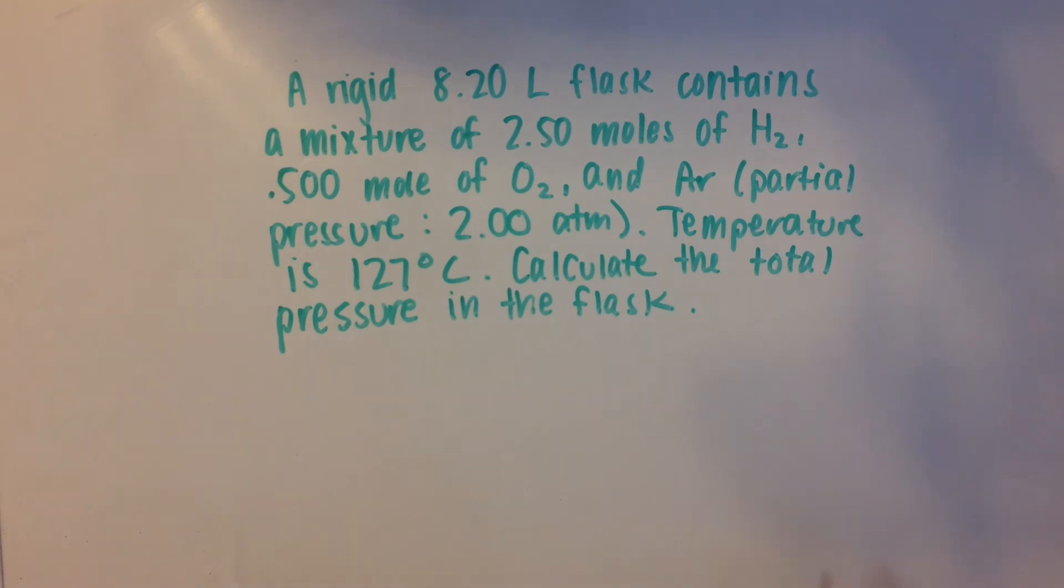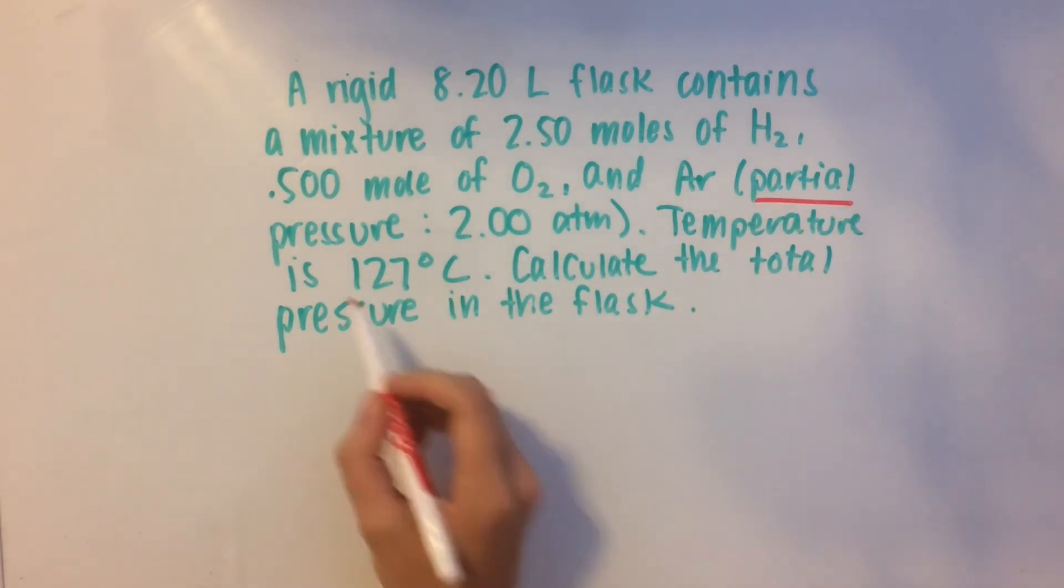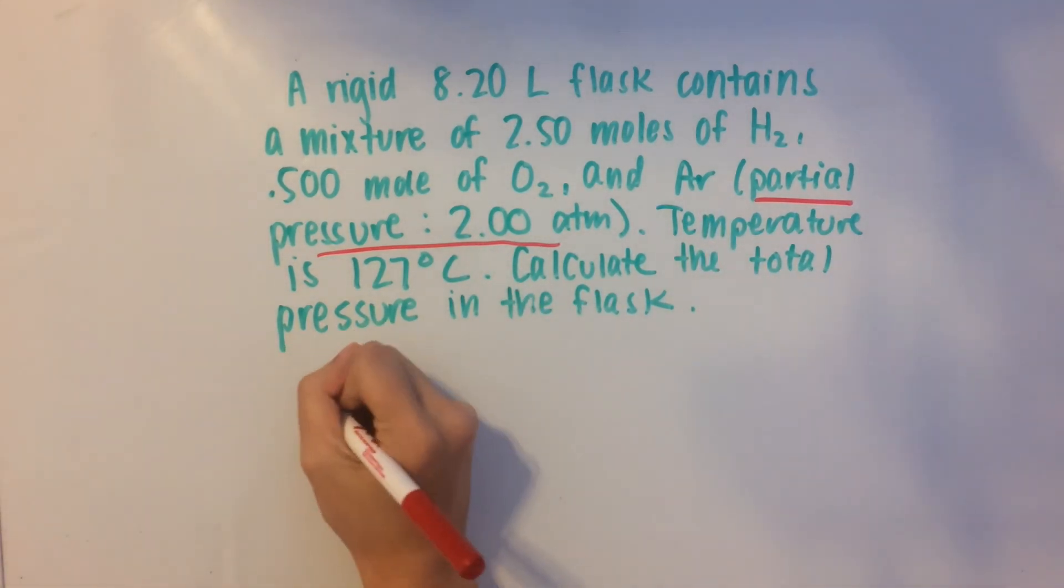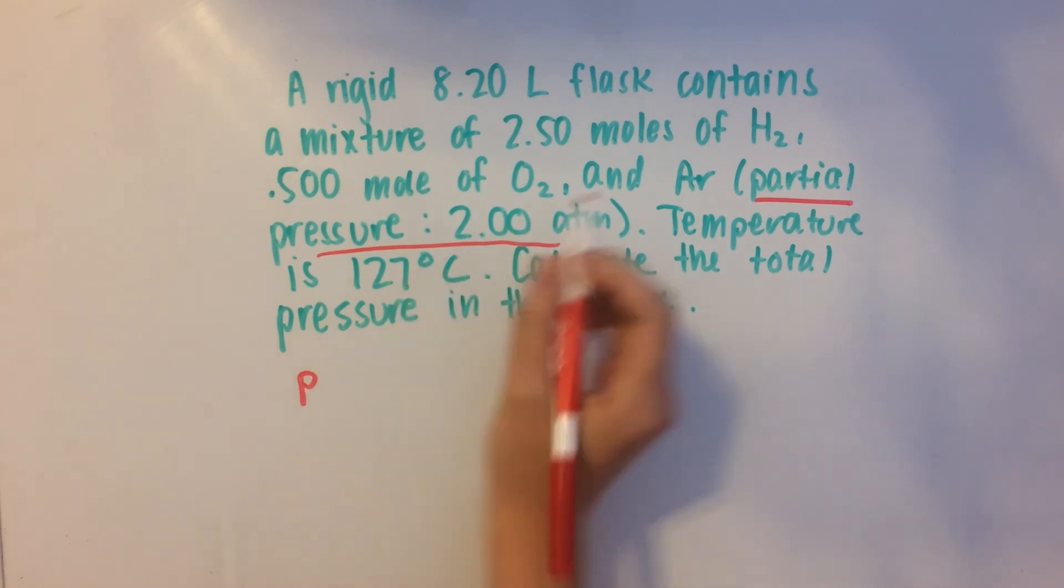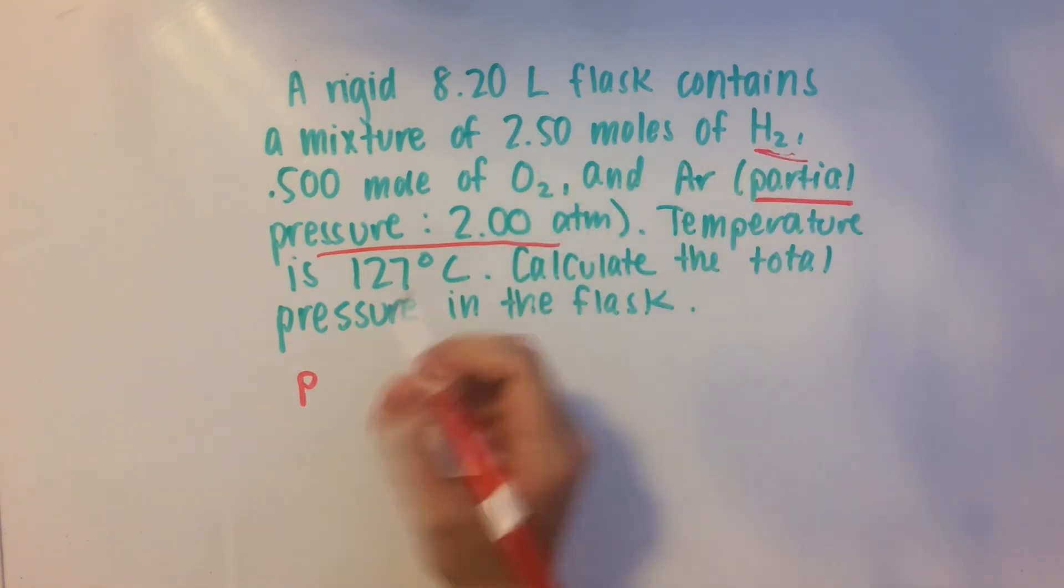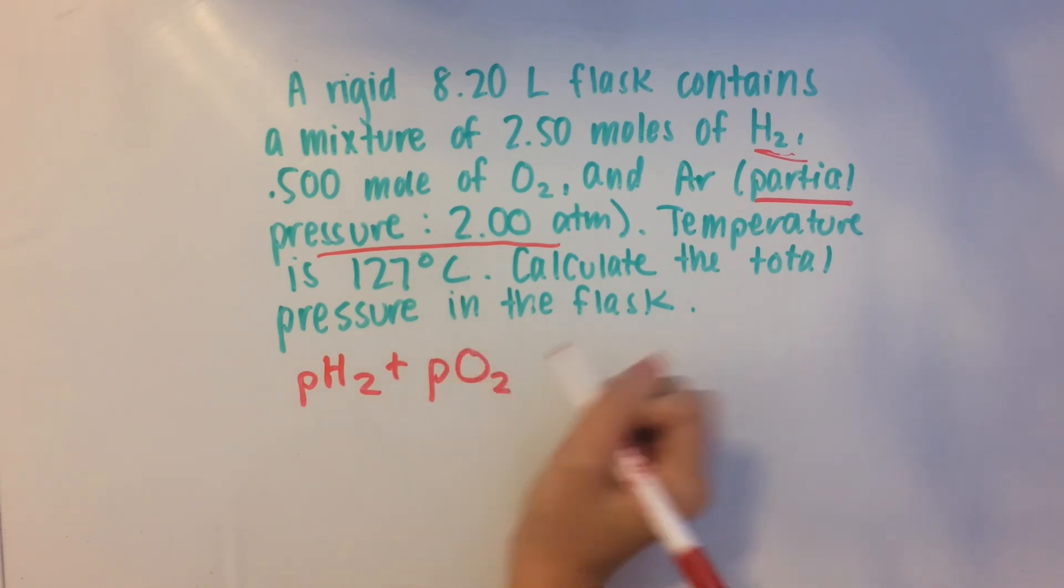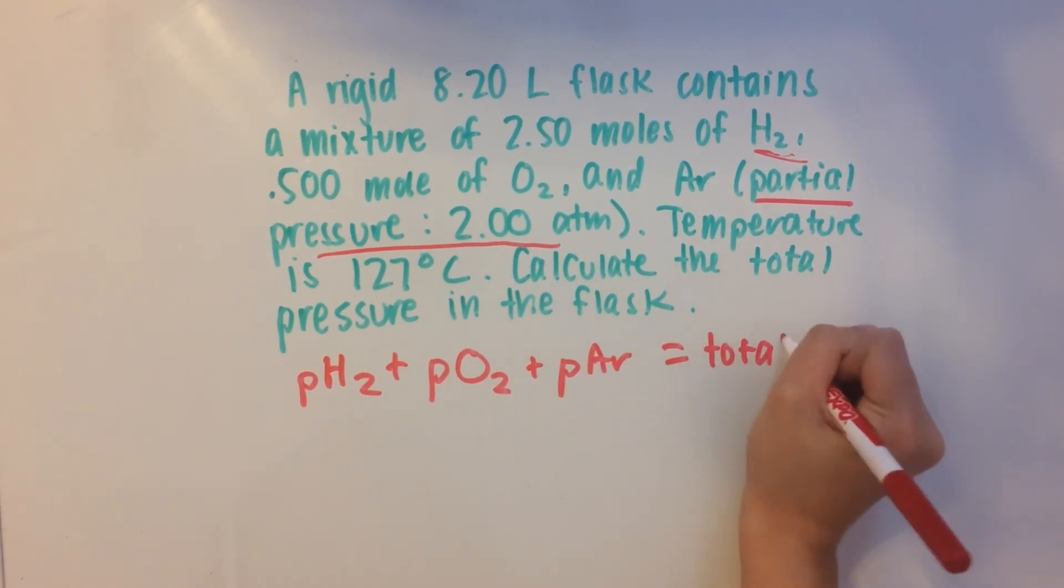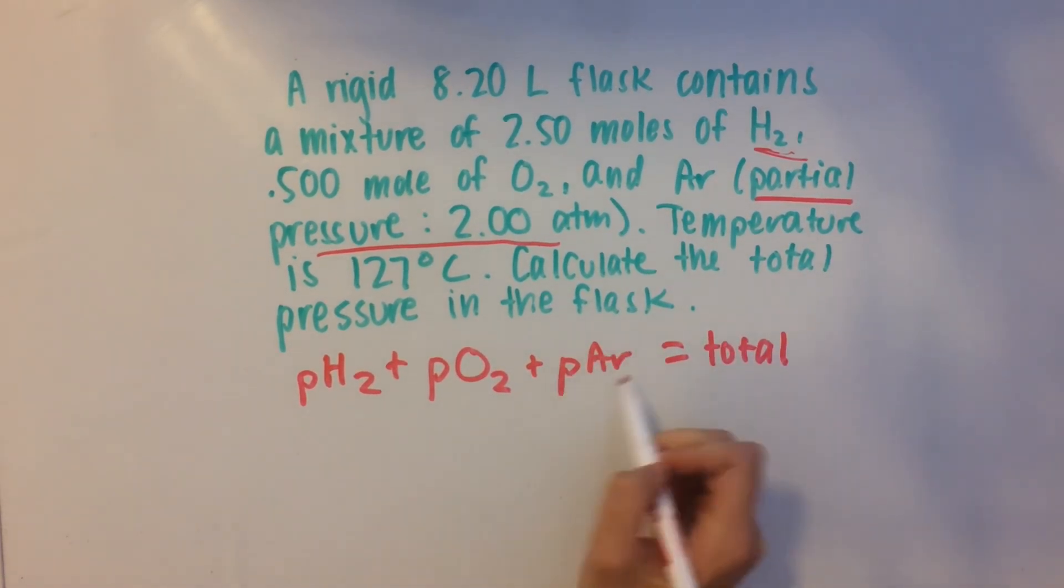So what we need to do is we're already given the partial pressure of argon, which is 2 atmospheres. So we need the pressure of H2 and the pressure of O2 and the pressure of argon. And that's going to give you the total pressure in the flask.